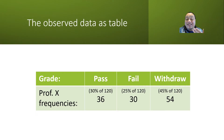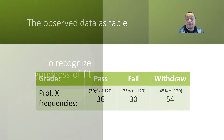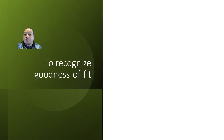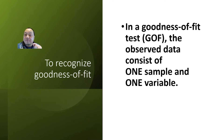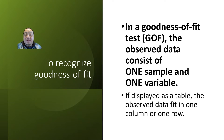Multiplying percents by the sample size of 120 students, we have a table of observed frequencies. Still just one row. Therefore, here's the rule to recognize goodness of fit. In a goodness-of-fit test, the observed data consists of one sample and one variable, and if displayed as a table, the observed data fit into one column or one row.